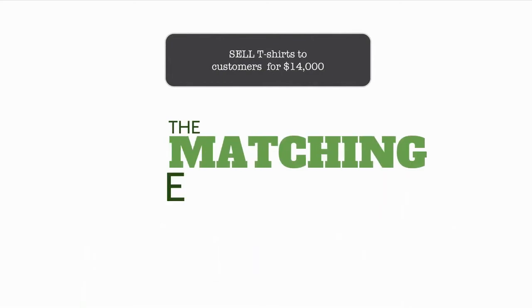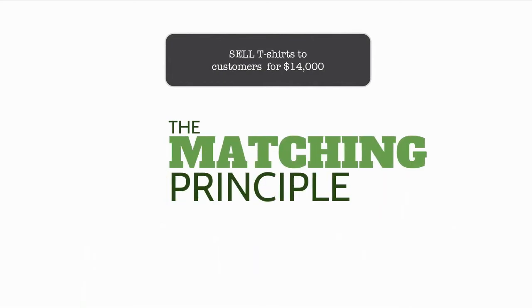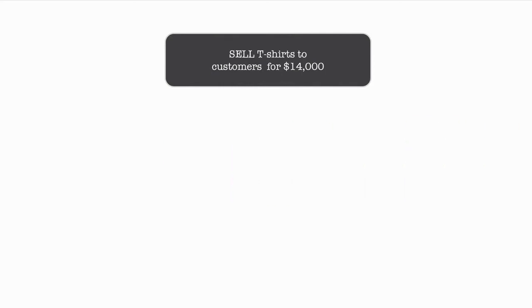This is part of what's considered the matching principle in accounting. So let's now assume that all of the t-shirts that were originally purchased are sold to customers for $14,000 throughout the year. At the time of the sale, the company would debit cash for $14,000 — what they received from their customers — and credit sales revenue in the income statement for $14,000.